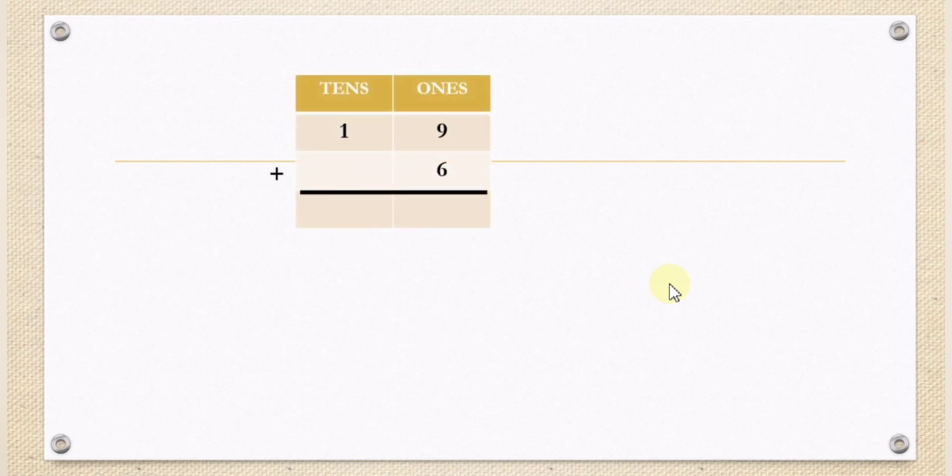Place value charts. Here we have 6 plus 9. The result of 6 plus 9 is 15. Here, 1 and 5 or 15. But 1 belongs to the place values of 10, that's why we carry it over to 10. Then 1 plus 1 equals 2. The result of 6 plus 19 is 25.